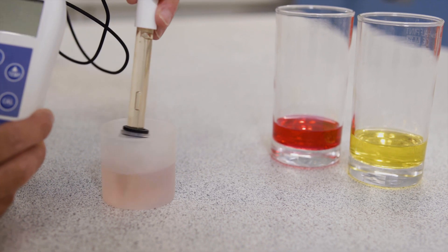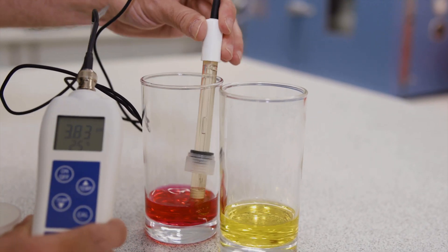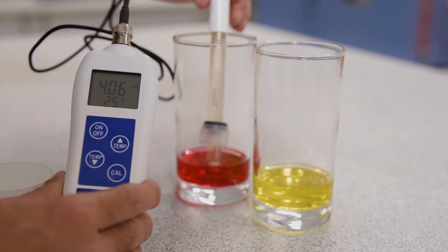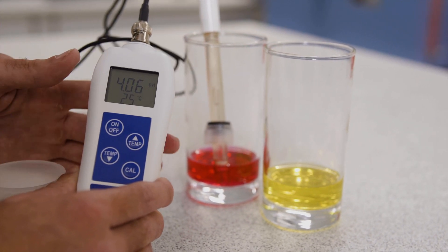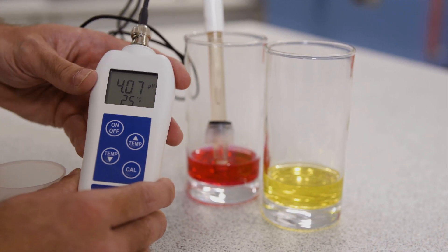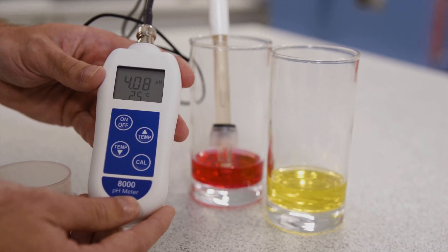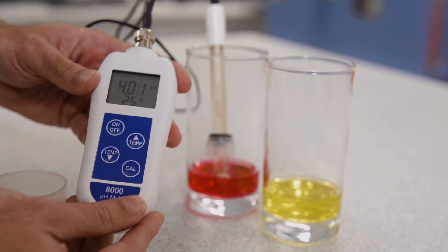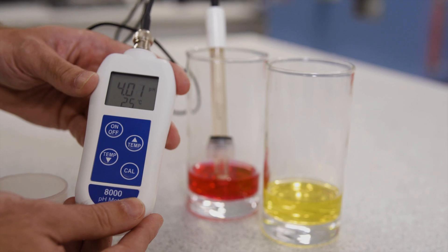But some pH meters or applications will require a two-point calibration method using an additional solution with a different pH value, usually 4 or 10. This makes the instrument more accurate at the values it has been calibrated to. Therefore, if your application is typically more acidic or more alkaline, you should choose a pH buffer to reflect this.